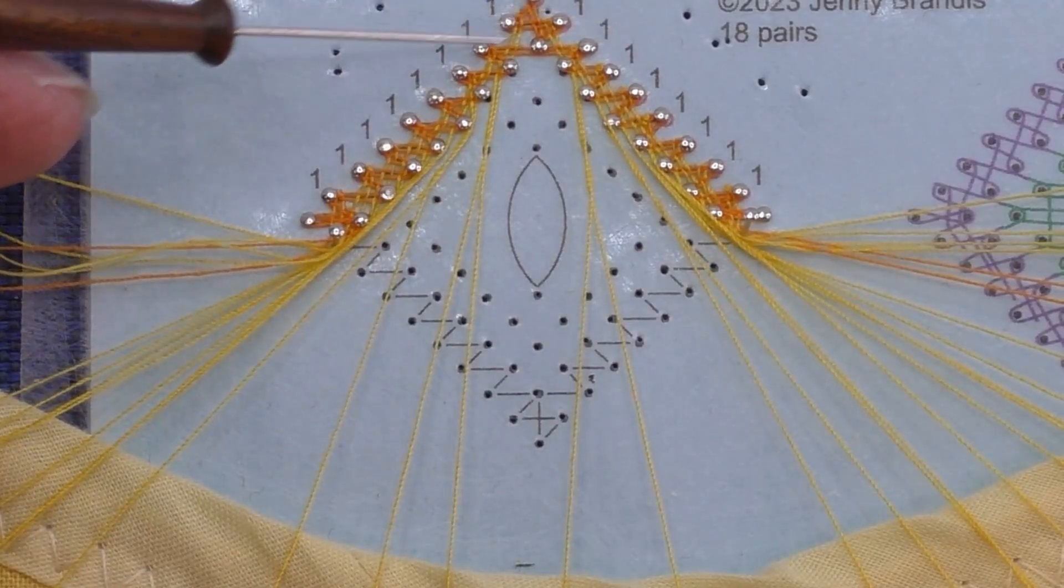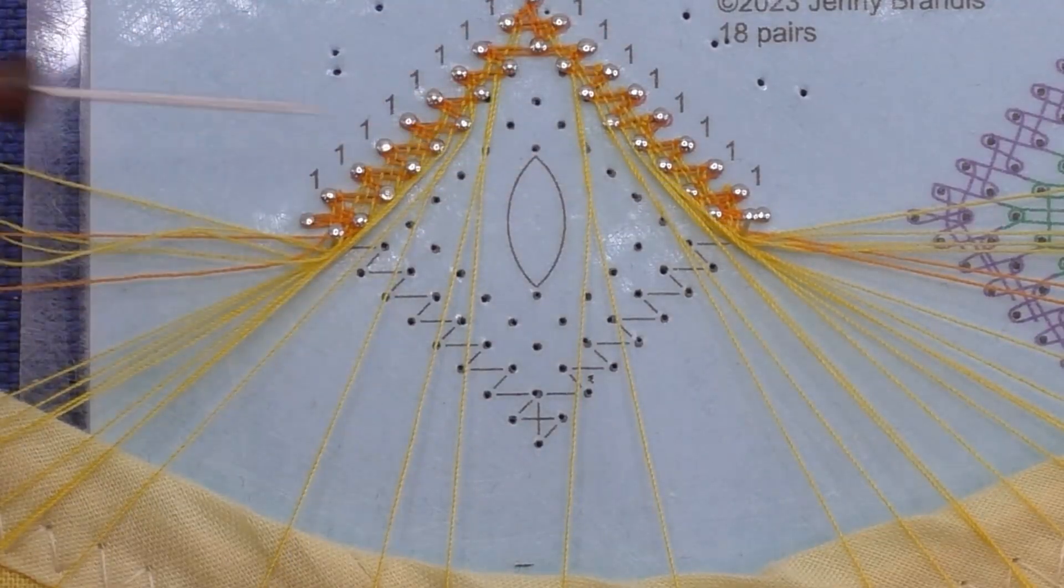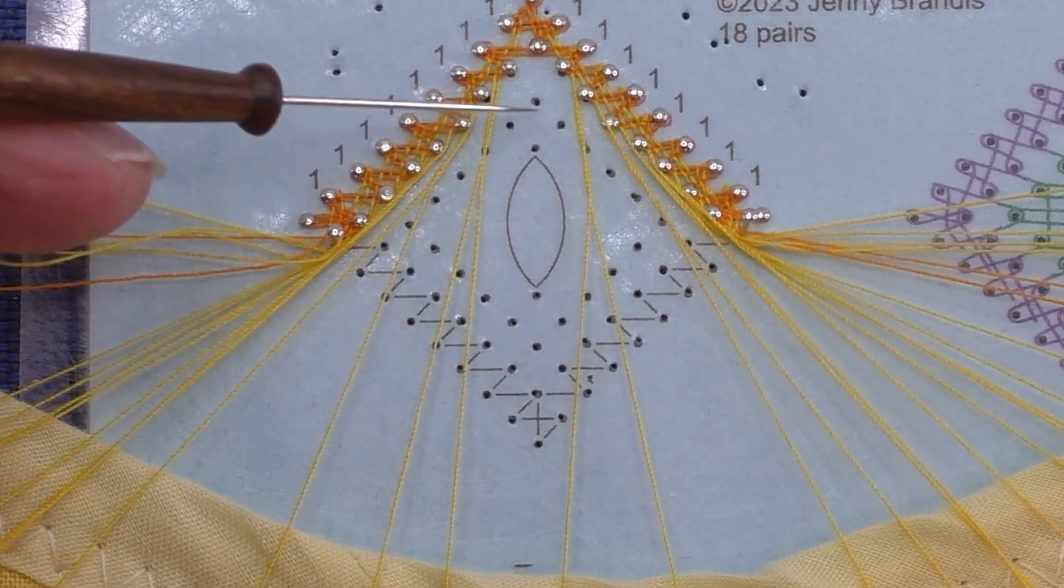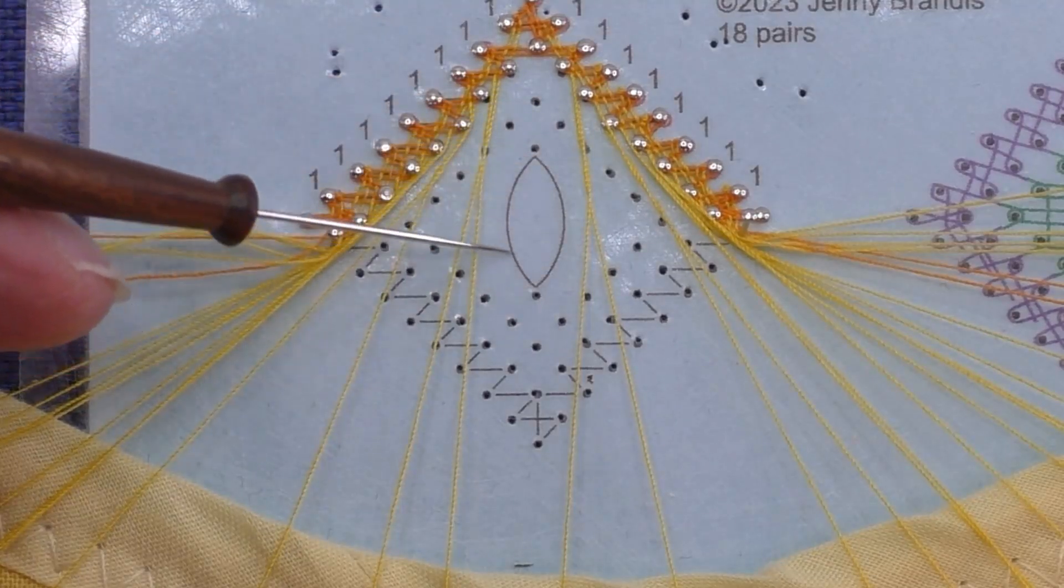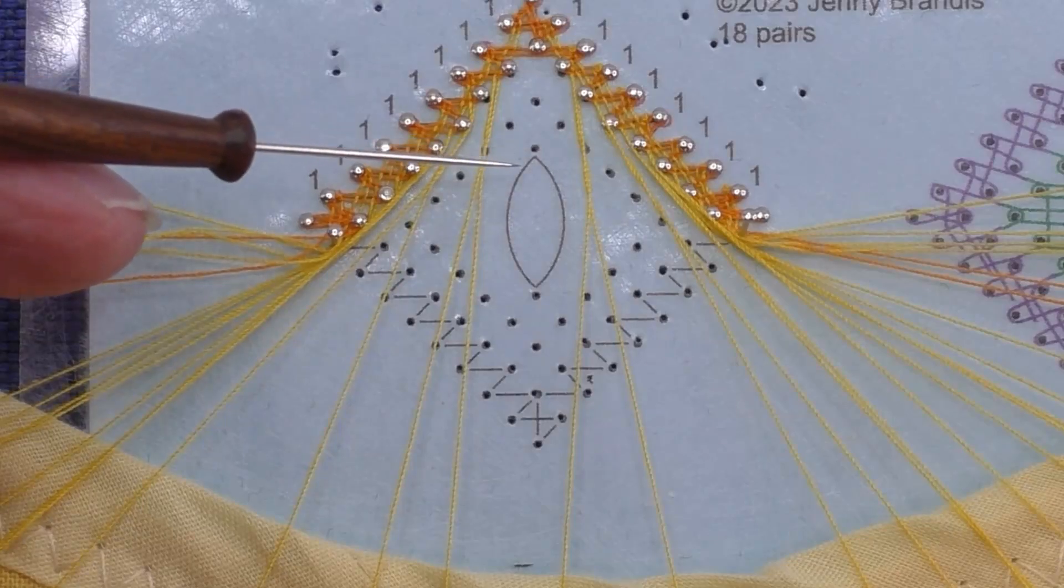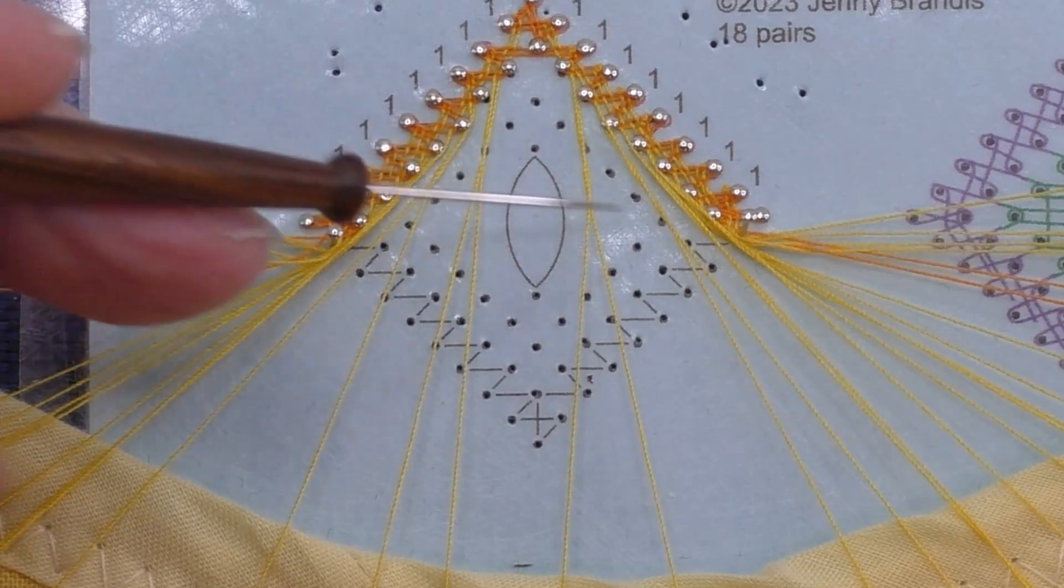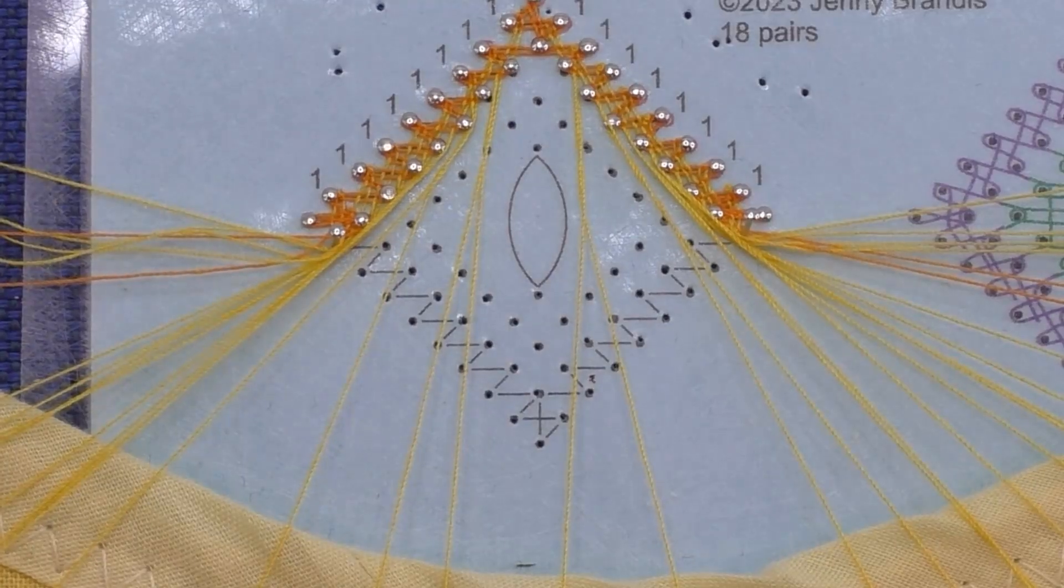The surround is worked as a simple winkle pin or spoked edge, which I have linked in the description below. We are going to start the half stitch diamond as usual and add a tally or a leaf as an overlay without adding any extra pairs.